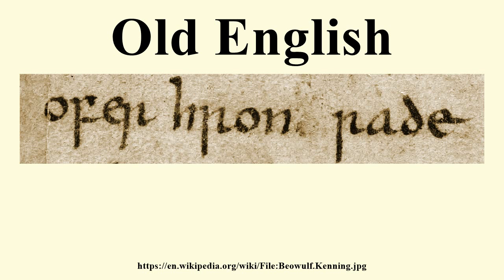Old English was not static, and its usage covered a period of 700 years, from the Anglo-Saxon settlement of Britain in the fifth century to the late 11th century, some time after the Norman invasion. Old English is a West Germanic language, developing out of Ingvaeonic dialects from the fifth century. It came to be spoken over most of the territory of the Anglo-Saxon kingdoms which became the Kingdom of England, including most of present-day England as well as part of what is now southeastern Scotland. Other parts of the island — Wales and most of Scotland — continued to use Celtic languages, except in the areas of Scandinavian settlements where Old Norse was spoken.